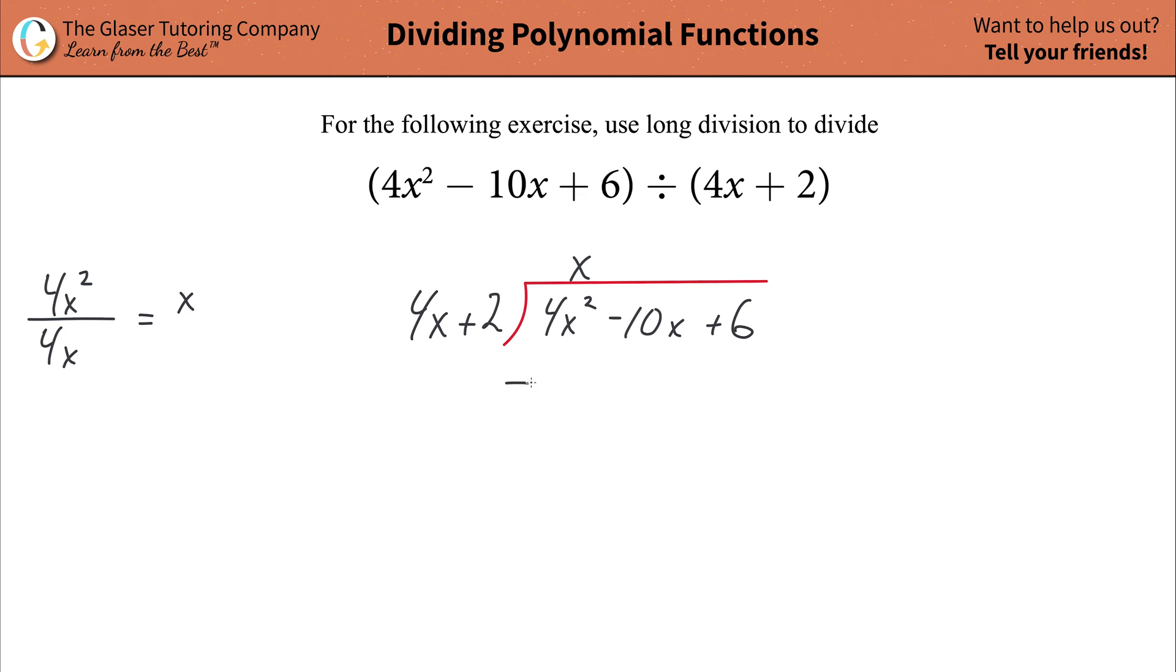Now after you do that, you're going to write a subtraction symbol and then parentheses. Now you're going to take that quotient value, take x, and multiply it by each of these two terms in your divisor. So first do x times 4x. That works out to be a positive 4x squared. Then you're going to take that x and multiply it by your 2. So what's x times 2? That's right. Positive 2x. And x times 0 is just 0.